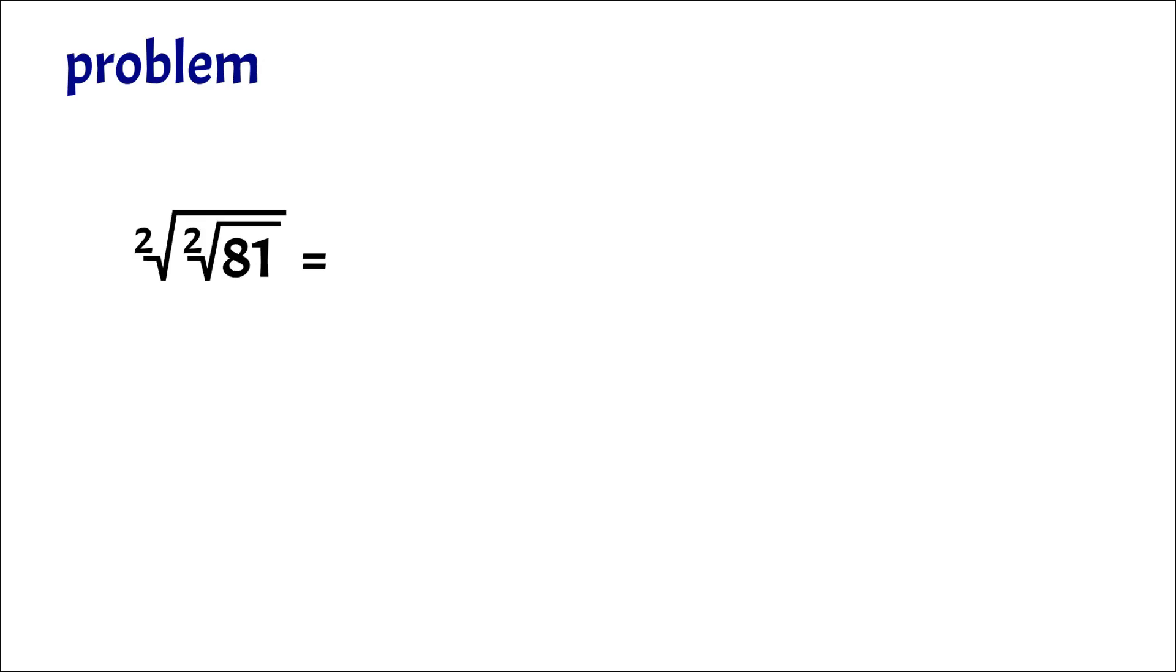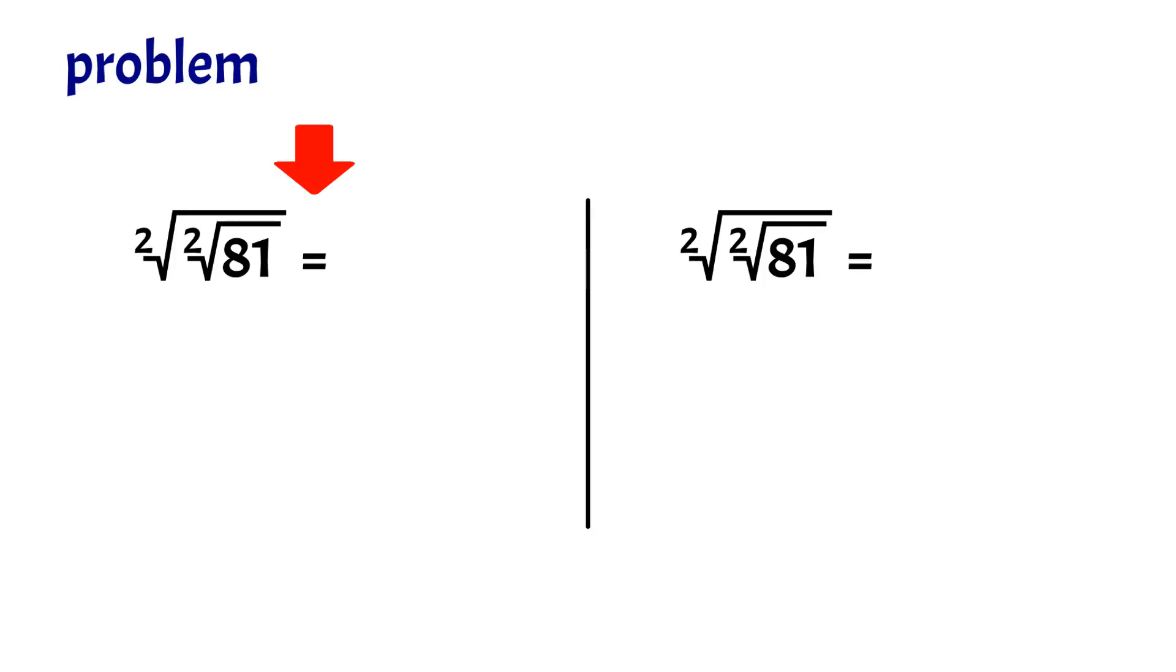So if we have a problem like this, we can solve it in two different ways. The first way is just taking the root one by one from the inside out. And the second way is to change a double root into single one and proceed.